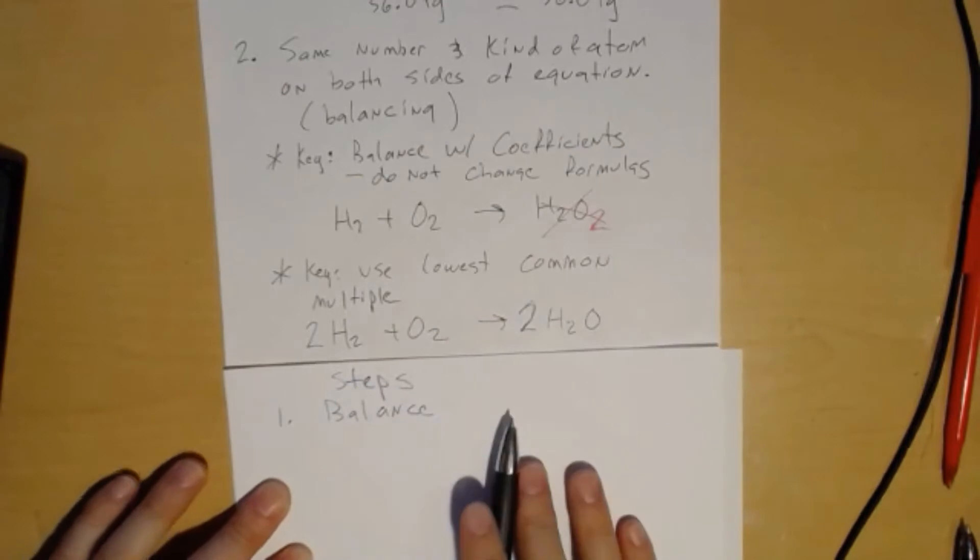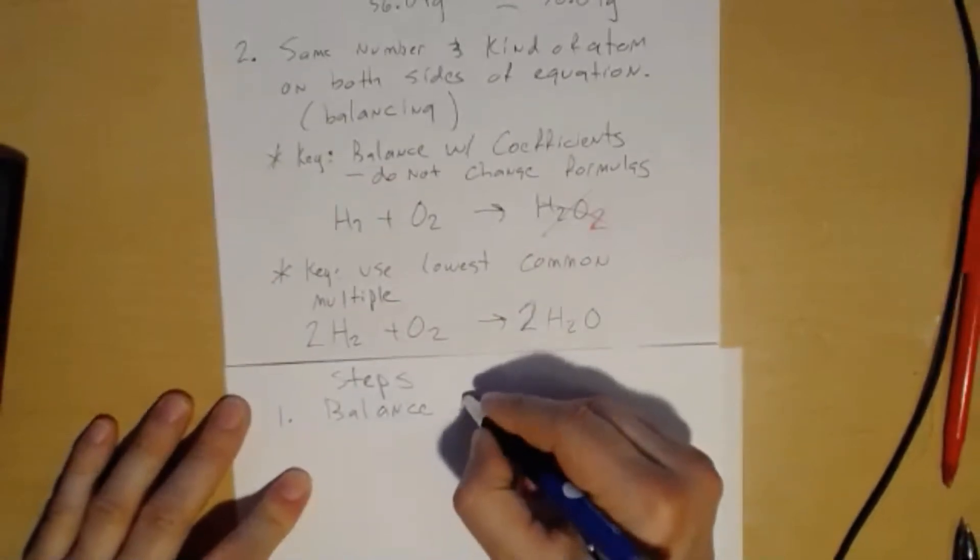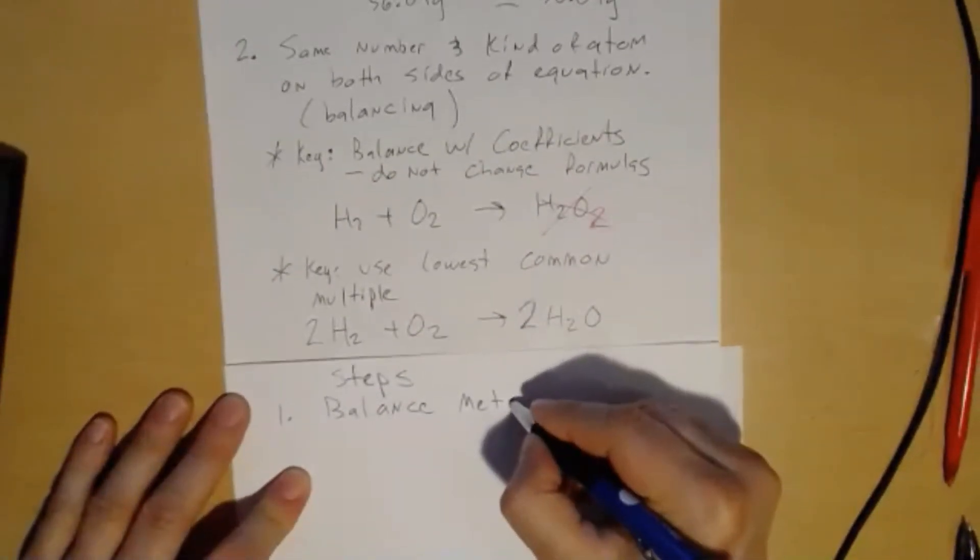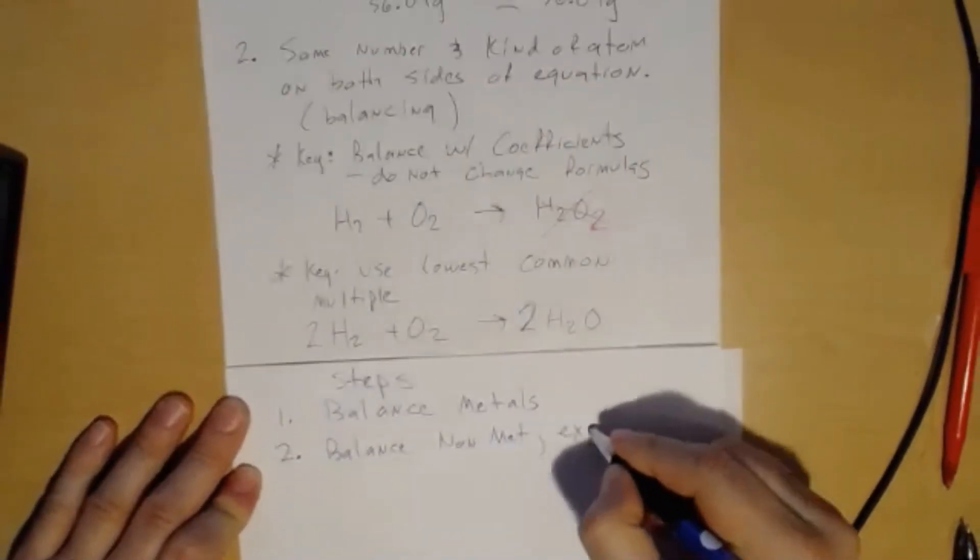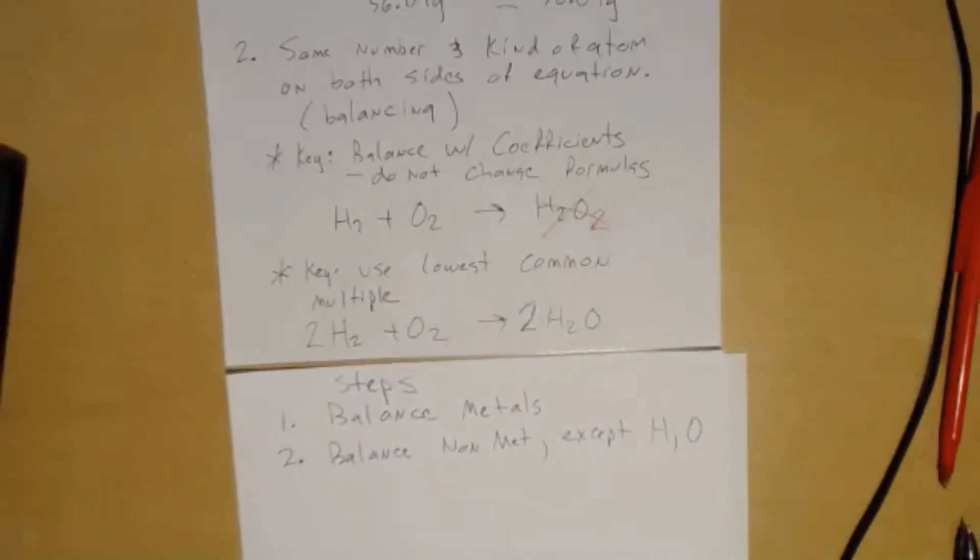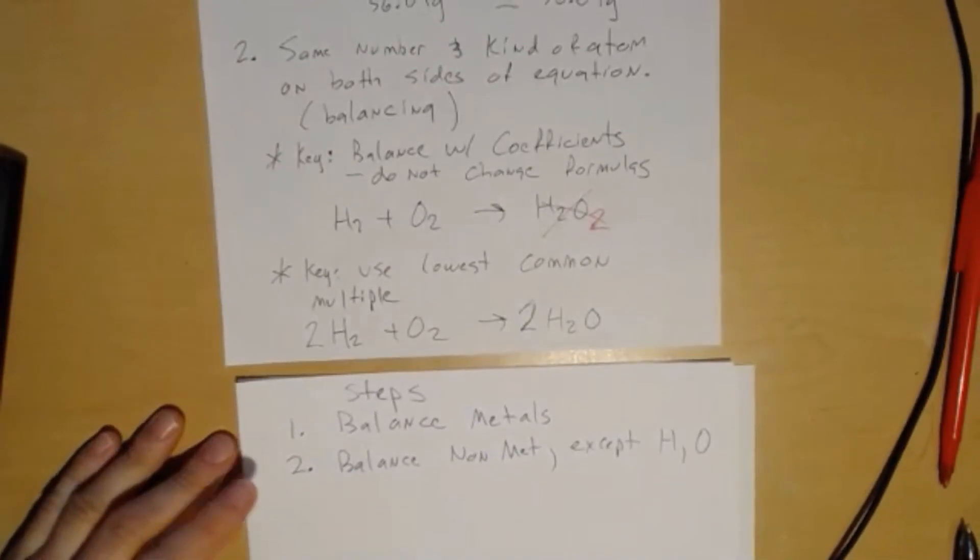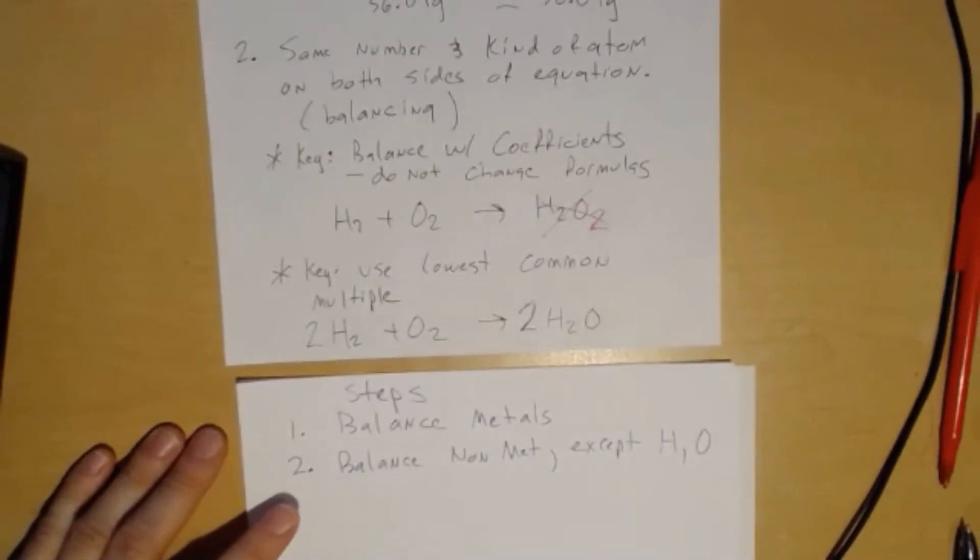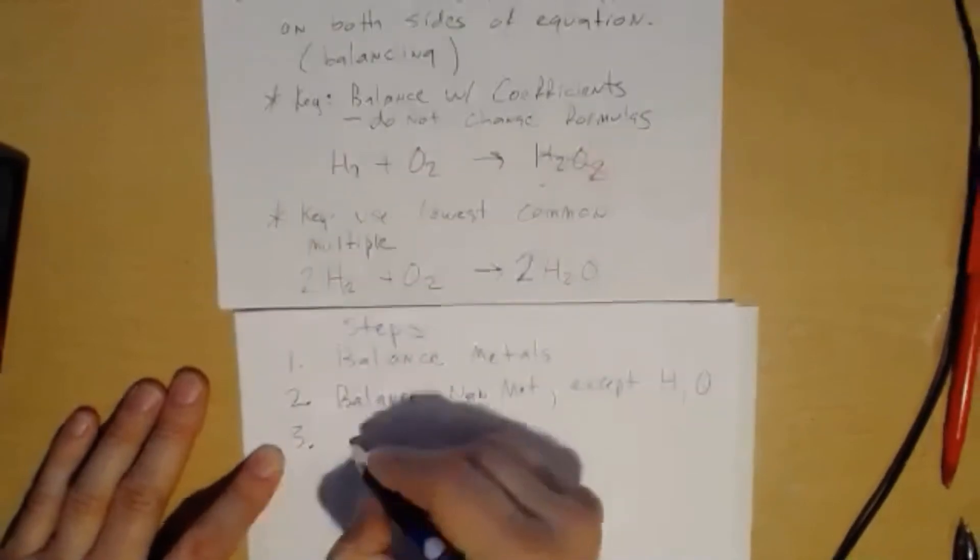Now when you get more adroit at this, you might say, 'Oh, I want to balance the nitrogen because that looks like a mess.' But in general, this is a nice way to go if you're starting out. Balance metals. Two, balance non-metals except hydrogen and oxygen. Those are the hardest to balance. So hydrogen is the most abundant element in the universe, it's 99 percent of matter when we look out to the stars. Oxygen is the most abundant on our planet, it's over 50 percent of the mass of our planet. So generally, you balance the metals, then the non-metals, then you balance hydrogen.